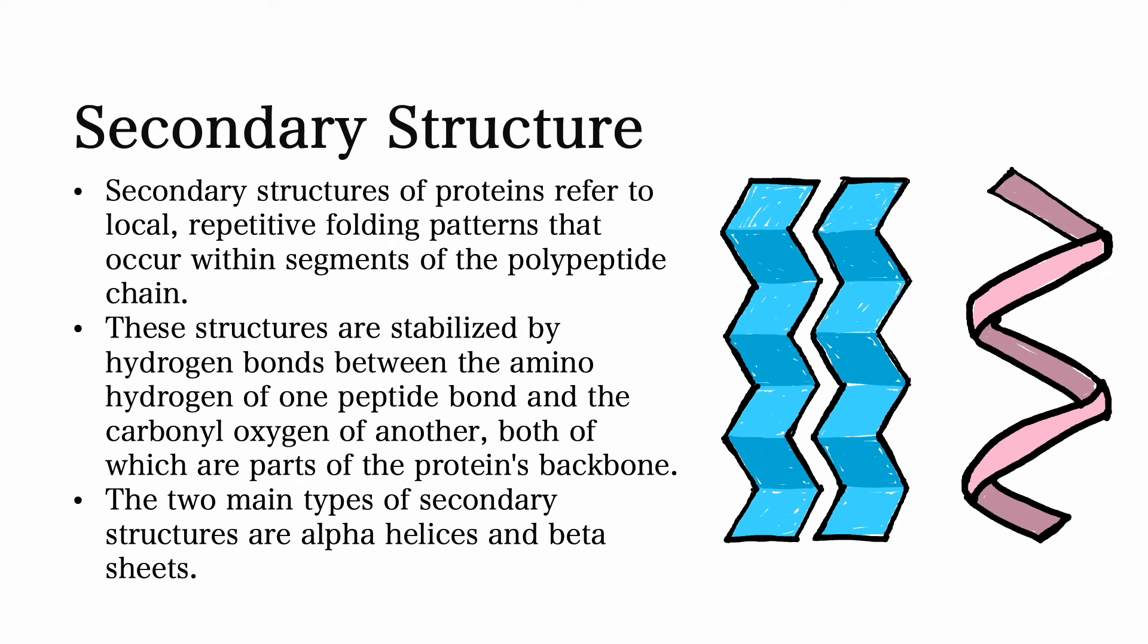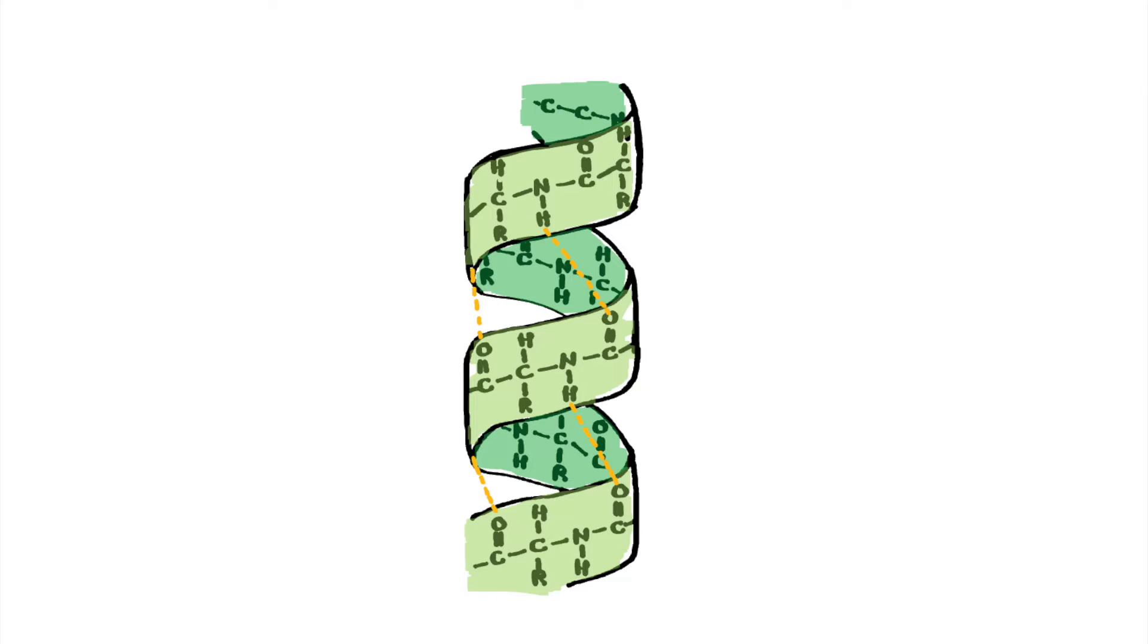Secondary structures of proteins refer to local, repetitive folding patterns that occur within a segment of the polypeptide chain. These structures are stabilized primarily by hydrogen bonds between the amino hydrogen of one peptide bond and the carboxyl oxygen of another.